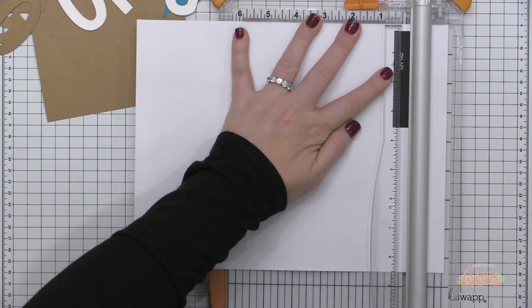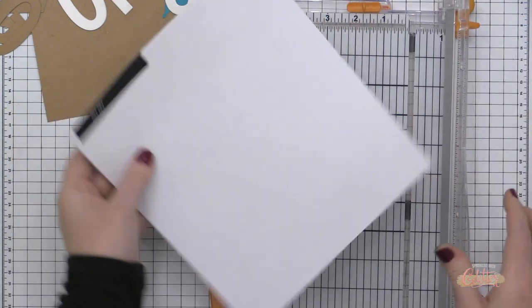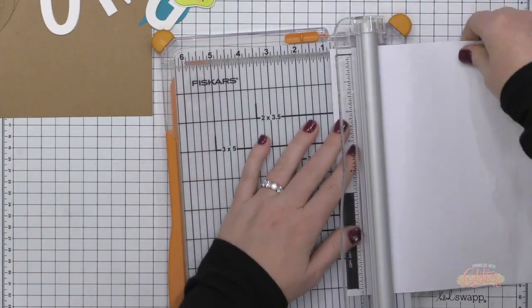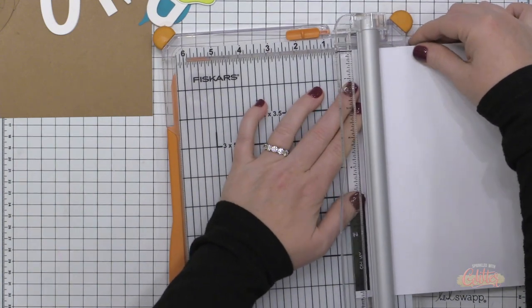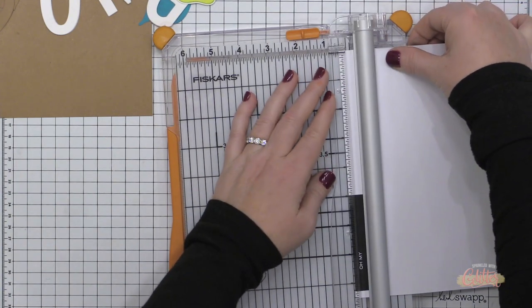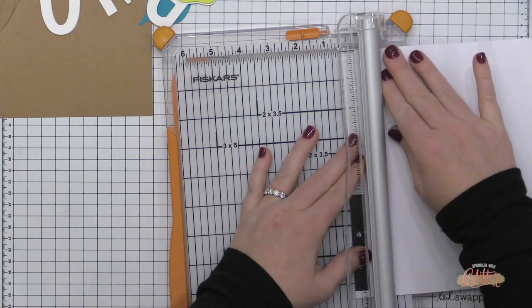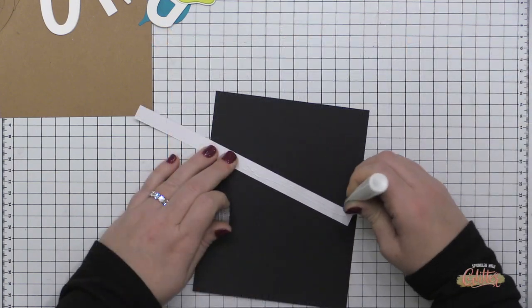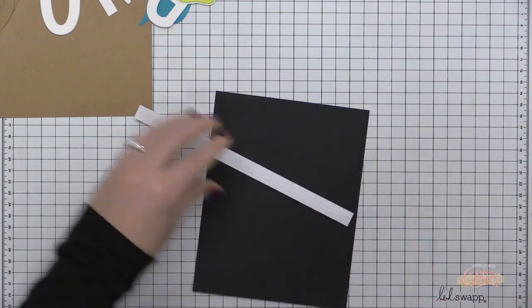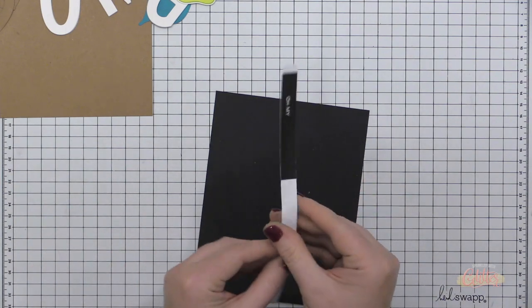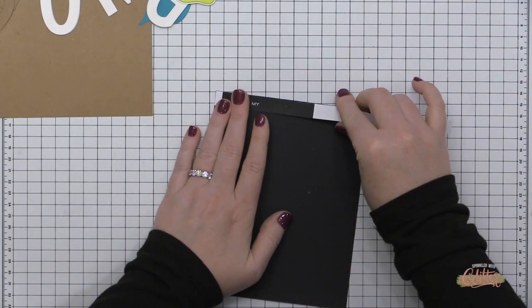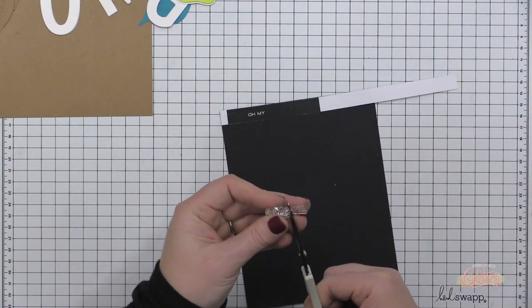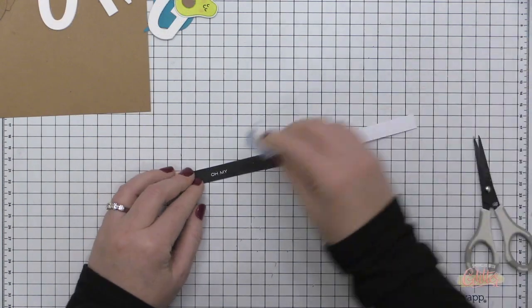Now here is the sentiment strip that I created on my computer and I printed it out on some regular printer paper and the only thing that's on here is a black box and some white letters that say oh my. And I'm placing this into my trimmer and I'm trimming it down to where I have no white edge. Then I'm going to add some liquid adhesive to the back of it and adhere it to some black cardstock. That's going to give this sentiment strip some weight so that I can add it onto my card and not have it be all floppy.